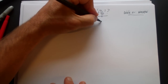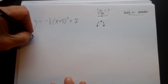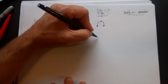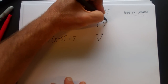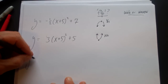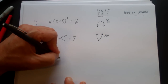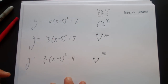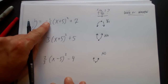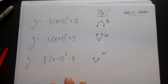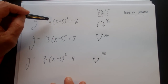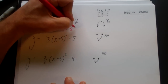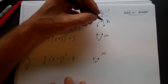For y equals negative one half times x plus five squared plus seven: it's negative so it flips and opens down. For y equals three times x plus five squared plus five: it's a positive number so it doesn't flip — it opens up. For y equals two thirds times x minus five squared minus four: also positive, so it opens up as well. Now for width: in the first case a is negative one half, so the absolute value of a is one half, which is less than one — that's a wide parabola.